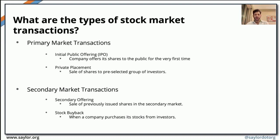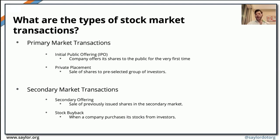To recap: an initial public offering is when shares are first introduced to the public. A secondary offering is when you resell already-owned shares again in the stock markets. Stock buyback, as explained, is when an organization decides to buy back shares that were already traded and owned by different investors, repurchasing them so the company becomes a private institution again.